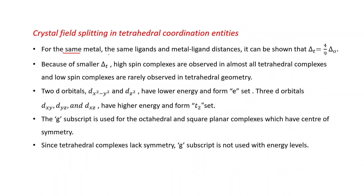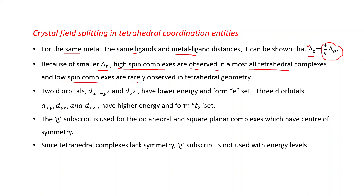For the same metal, the same ligands and metal-ligand distances, it can be shown that Δt = 4/9 of Δo. From this relationship you can clearly see that Δt is lower than Δo. Because of the smaller Δt, high spin complexes are observed in almost all tetrahedral complexes, and low spin complexes are rarely observed in tetrahedral geometry.